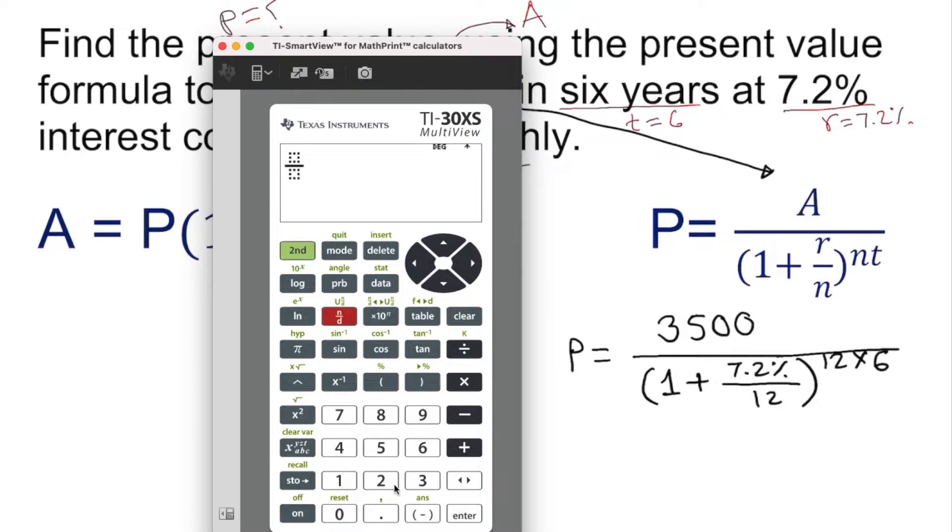Press n over d, 3500 over open parentheses, 1 plus n over d again, 7.2, second, open parentheses, scrolling down, 12, go to the right otherwise it's going to say syntax error. Close the parentheses. Hit the exponent cap, 12 times 6. If you don't hit this cap it's going to be written in the same line, which is a completely different answer. Hit enter and we have the principal - approximately $2275.17.